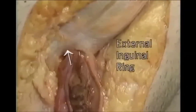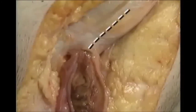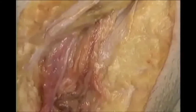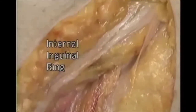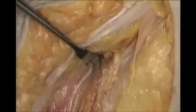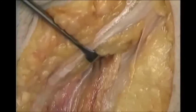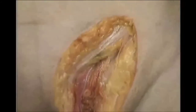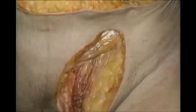Here we're at the external inguinal ring. We'll divide these external oblique fibres to get to the region of the internal inguinal ring, which is here. As it passes through the internal ring, the ductus deferens passes backwards. To follow the ductus deferens, we'll divide the abdominal wall and go round to the inside.